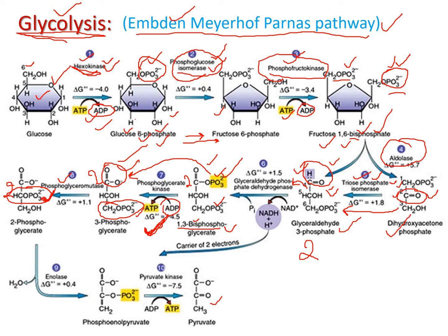Step nine is a dehydration reaction — the removal of a water molecule. In 2-phosphoglycerate, the OH group is removed from the third carbon and H is removed from the second carbon. This elimination reaction forms a double bond between the second and third carbons, producing phosphoenolpyruvate (PEP).